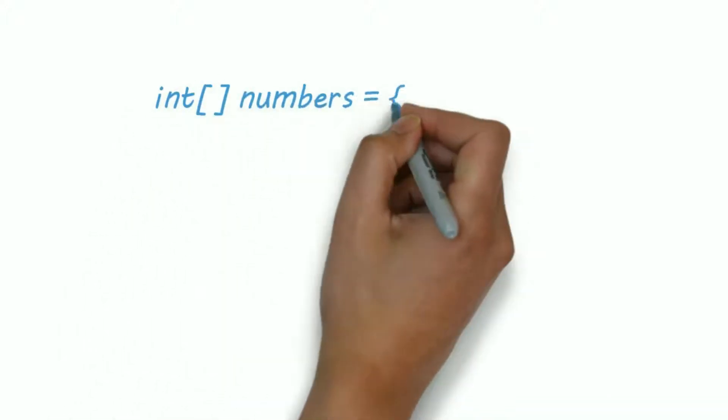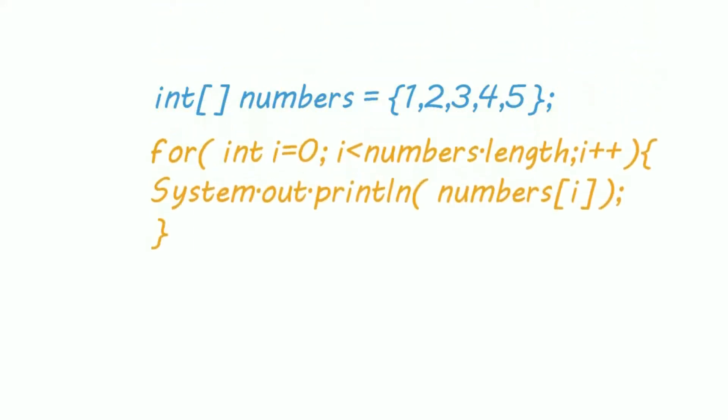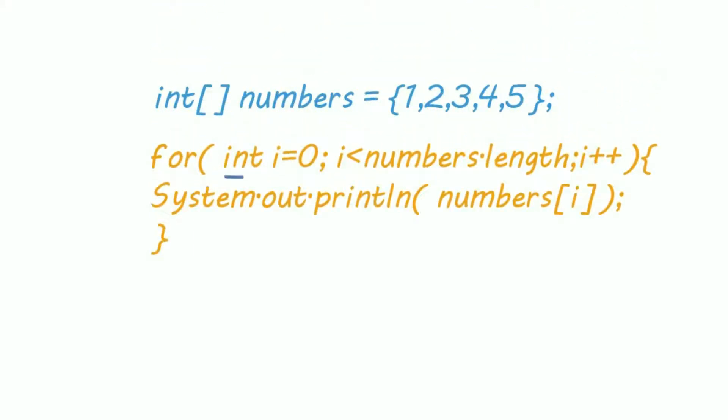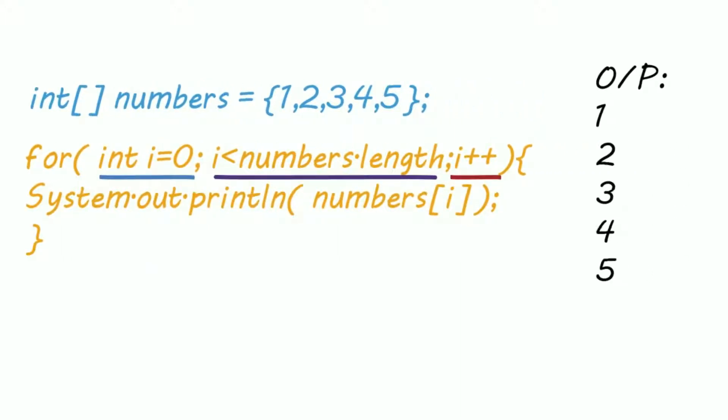Let's print an array using a for loop. So for, then we initialize a variable, that is i equals zero, then the condition, that is till the length of an array, and then we increment the value of i. It's pretty simple. Now answer this question.